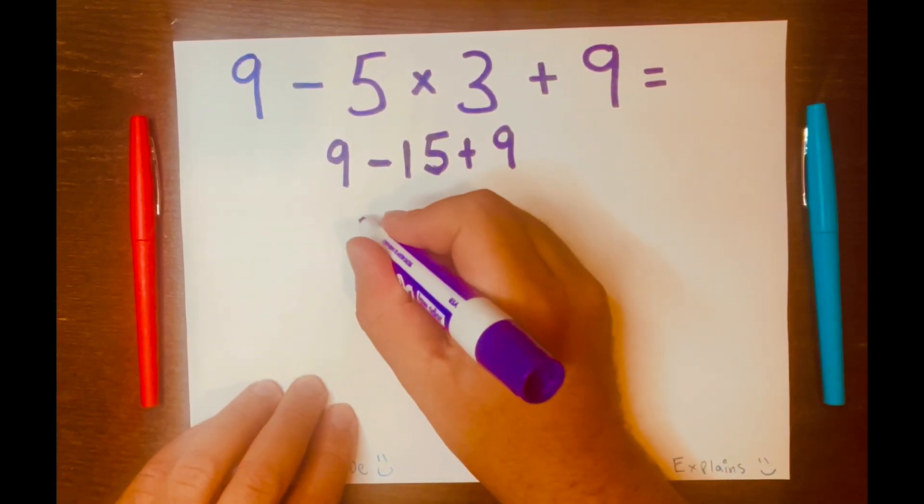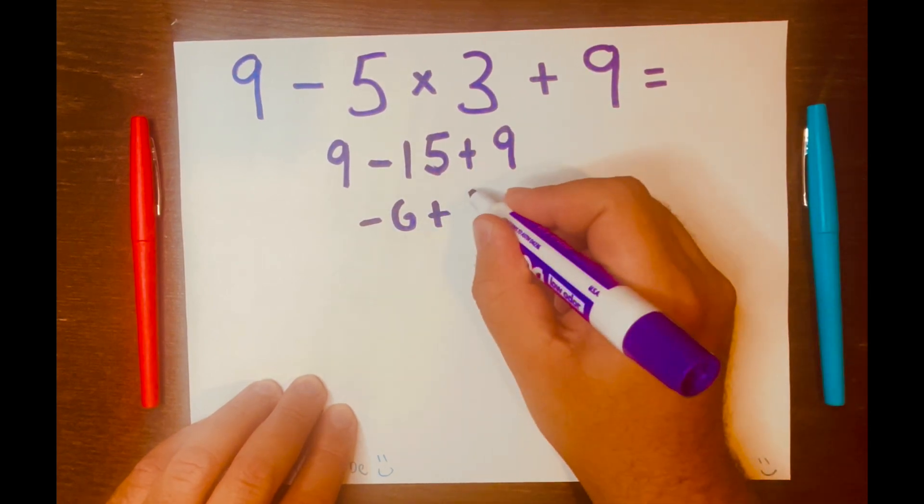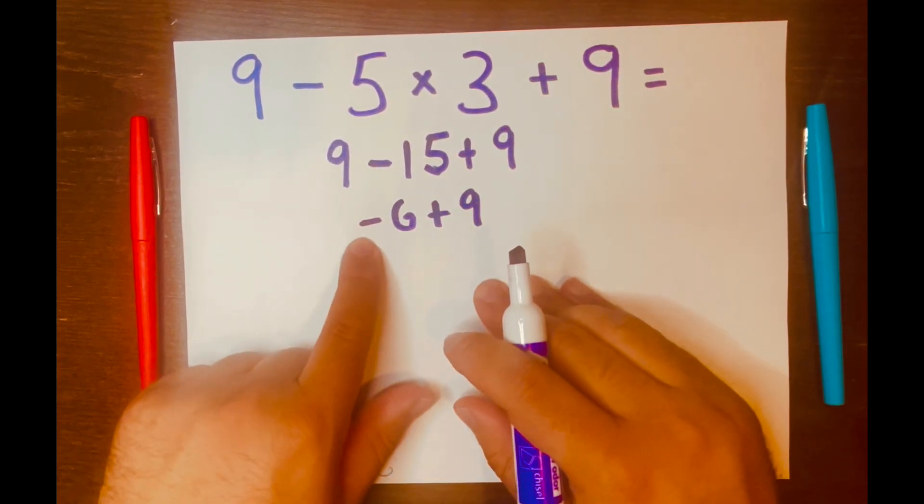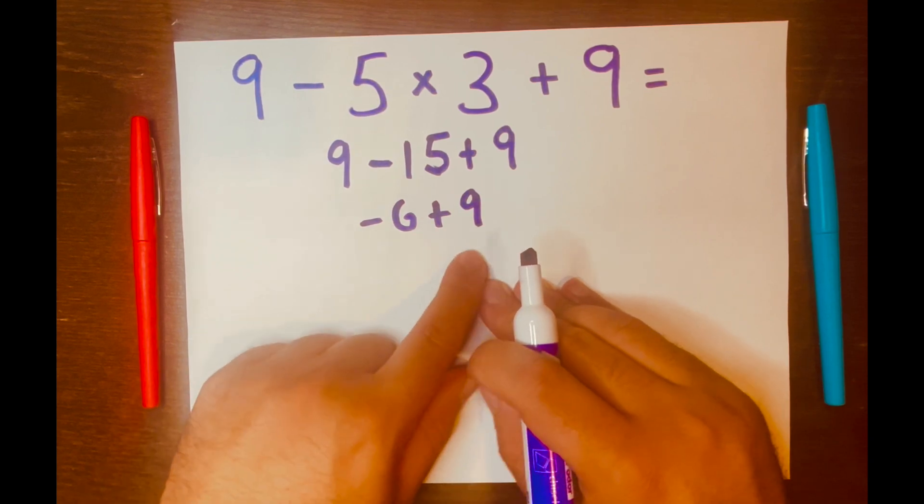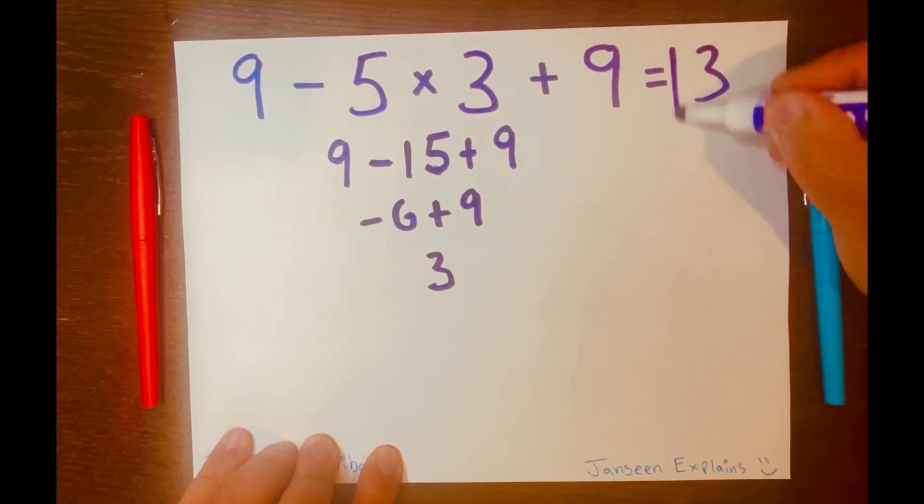What is that? Negative six. Bring down the addition symbol, the nine, and now negative six plus nine equals three. So your answer is three. And there you go.